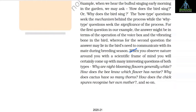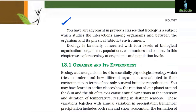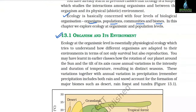When you observe nature around you with a scientific frame of mind, you will come up with many interesting questions of both types: why are night-blooming flowers generally white? How does the bee know which flower has nectar? Why does a cactus have so many thorns? Ecology is the subject which studies the interactions among organisms and between the organism and its physical, that is abiotic, environment. Ecology is basically concerned with four levels of biological organization: organisms, populations, communities, and biomes. In this chapter we explore ecology at the organismic and population levels.